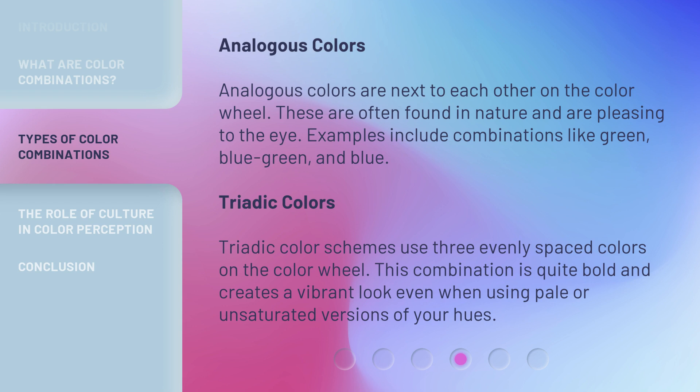Triadic color schemes use three evenly spaced colors on the color wheel. This combination is quite bold and creates a vibrant look even when using pale or unsaturated versions of your hues.